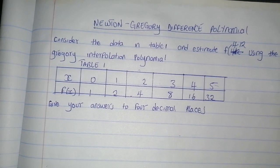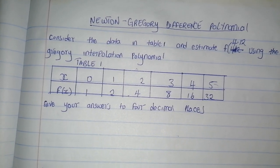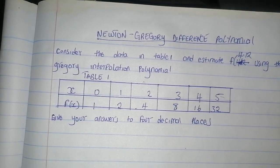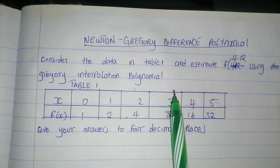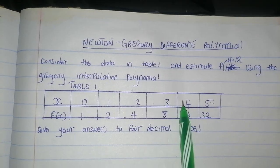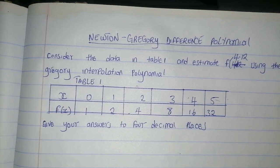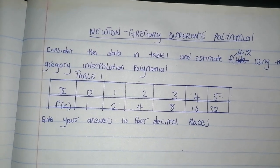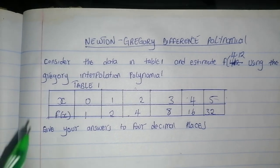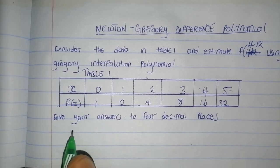When you have been given a problem like this, 4.12 lies between 4 and 5. This means that you will be using Newton-Gregory backward method. This is the method.